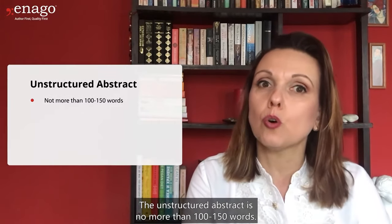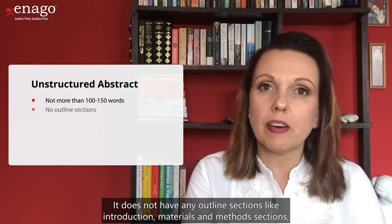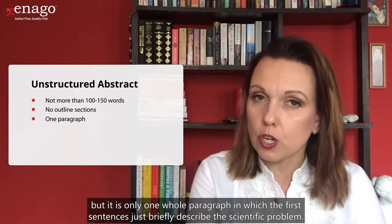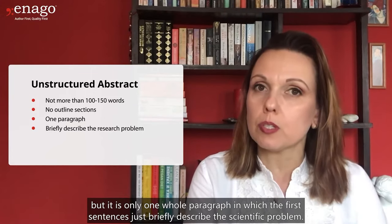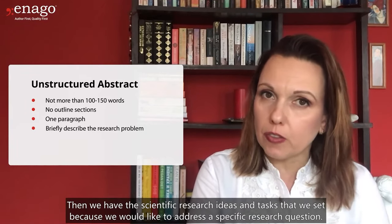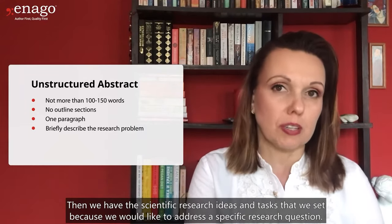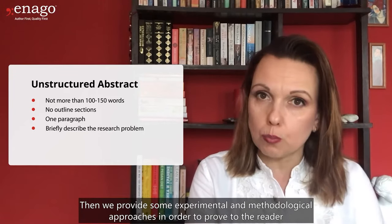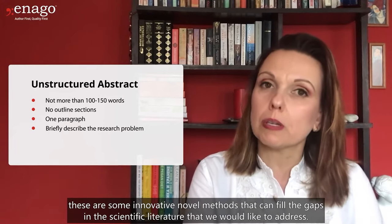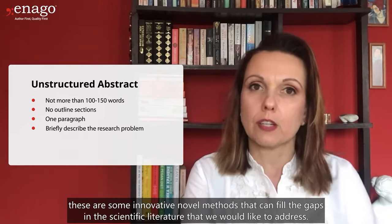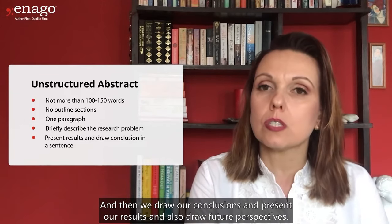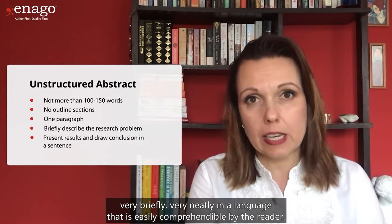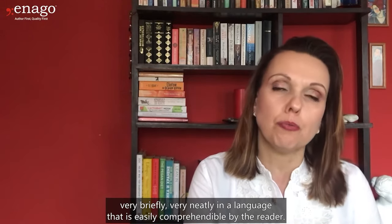The unstructured abstract is no more than 100 to 150 words. It does not have any outline sections like introduction, materials and methods, etc., but is only one whole paragraph. The first sentence briefly describes the scientific problem. Then we have the scientific research ideas and tasks we set to address a specific research question. We then provide some experimental and methodological approaches to prove to the reader these are innovative, novel methods that can fill the gaps in the scientific literature. Finally, we draw our conclusions, present our results, and draw future perspectives — all very briefly and in language that is easily comprehensible.